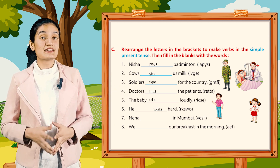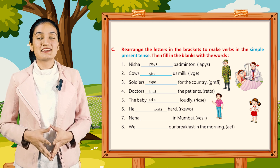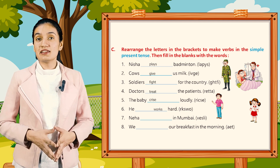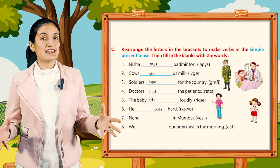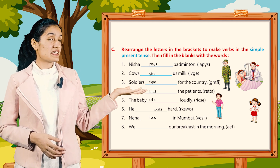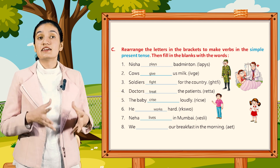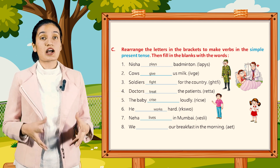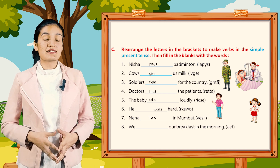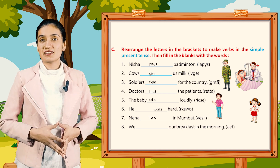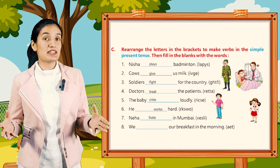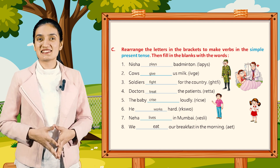Seventh, Neha dash in Mumbai — it will be: lives. Eight, we dash our breakfast in the morning — it will be: eat.